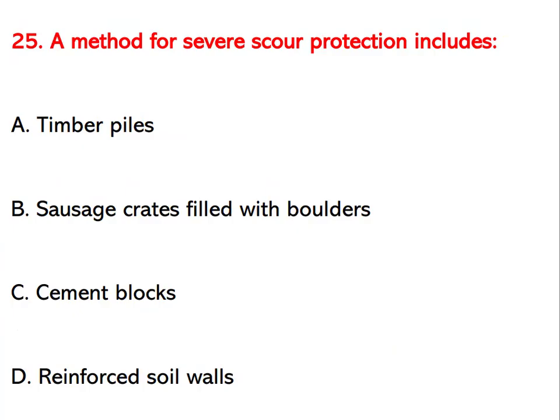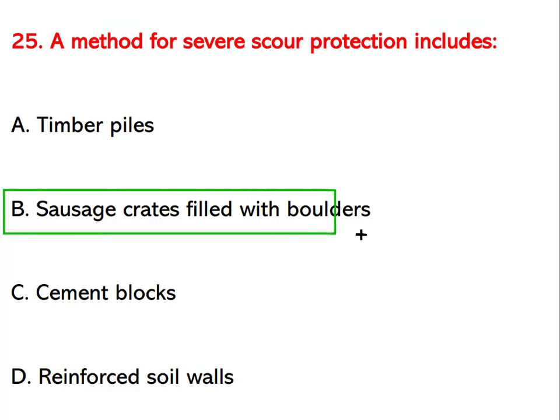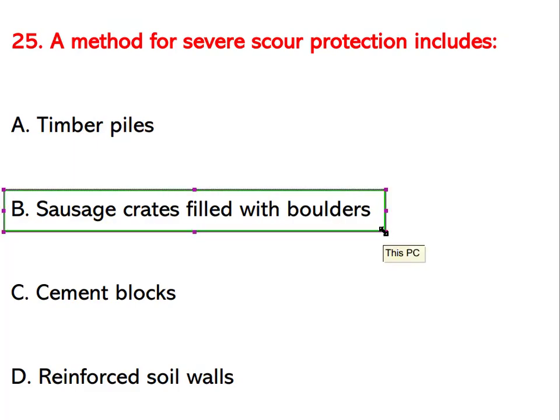A method for severe scour protection includes which option? Options are timber piles, sausage crates filled with boulders, cement blocks, or reinforced soil walls. The right answer is sausage crates filled with boulders.